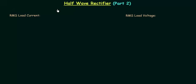In the previous lecture we obtained the output waveform for a half wave rectifier circuit. We also derived the expressions for average load current and average load voltage.